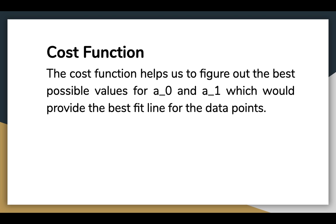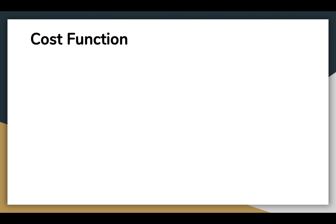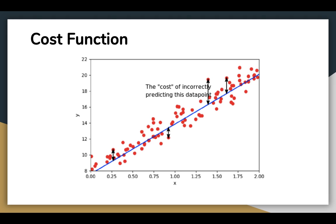The difference between the predicted values and the ground truth measures the error difference. We square the error difference and sum over all the data points and divide that value by the total number of data points. This provides the average squared error over all the data points. Therefore, this cost function is also known as the mean square error. By cost I mean the cost of incorrectly predicting a data point or how far the line is from the point.